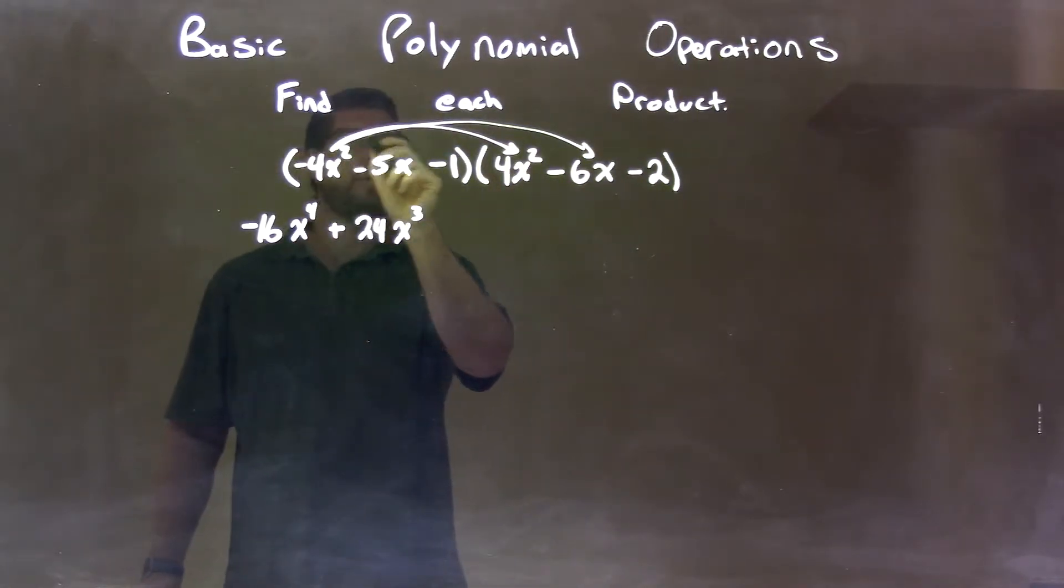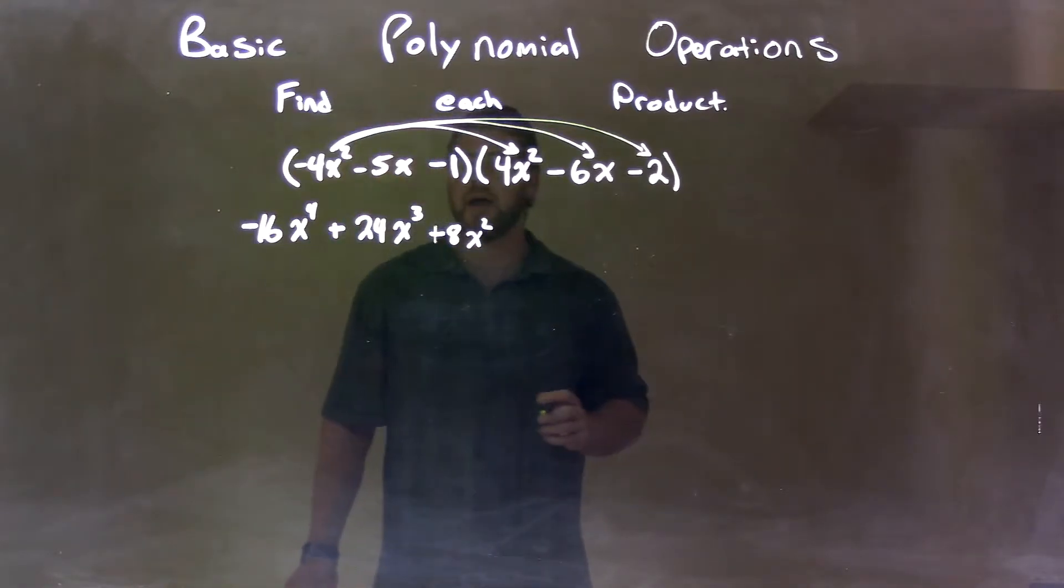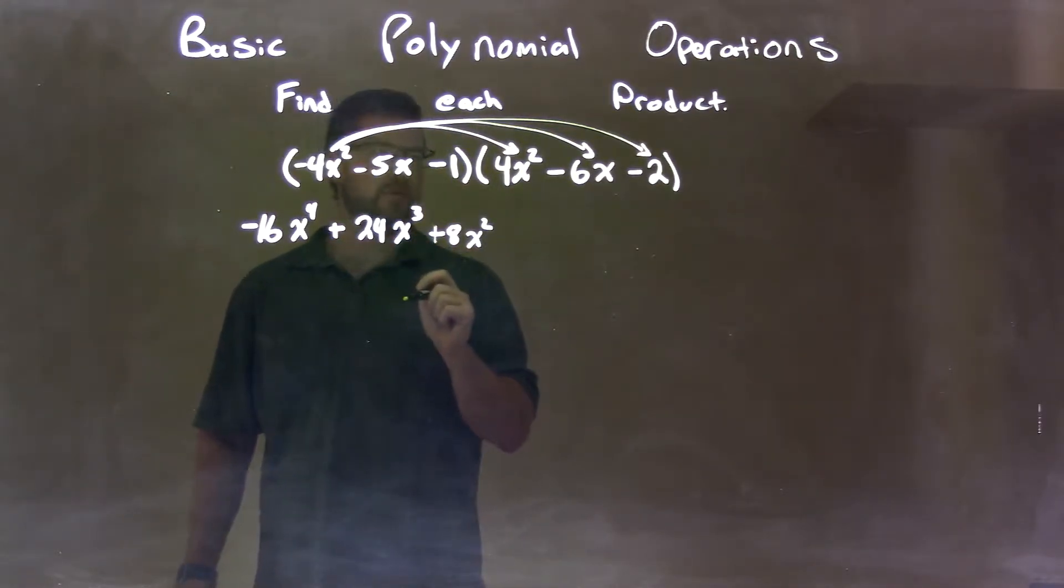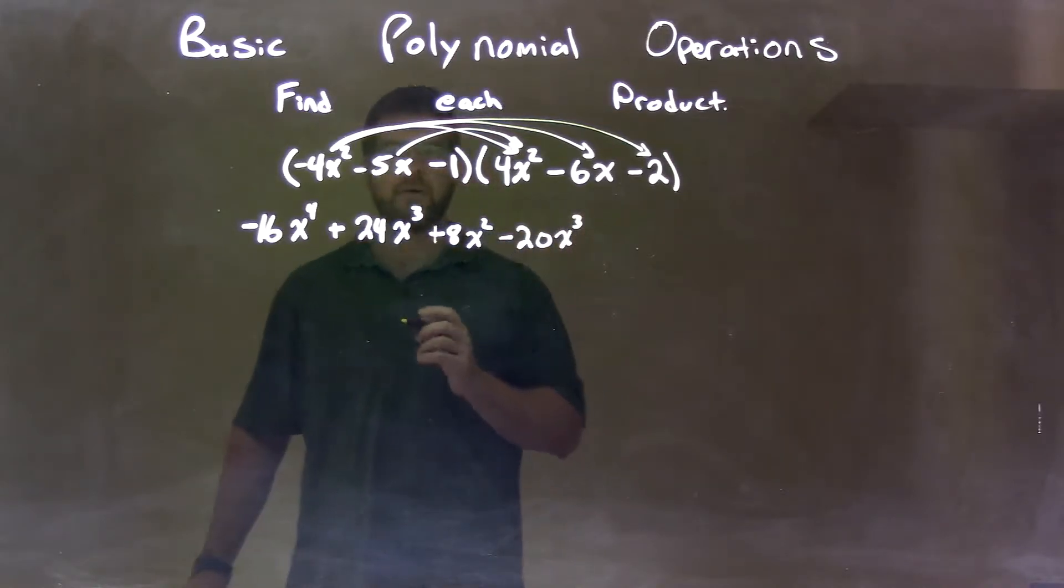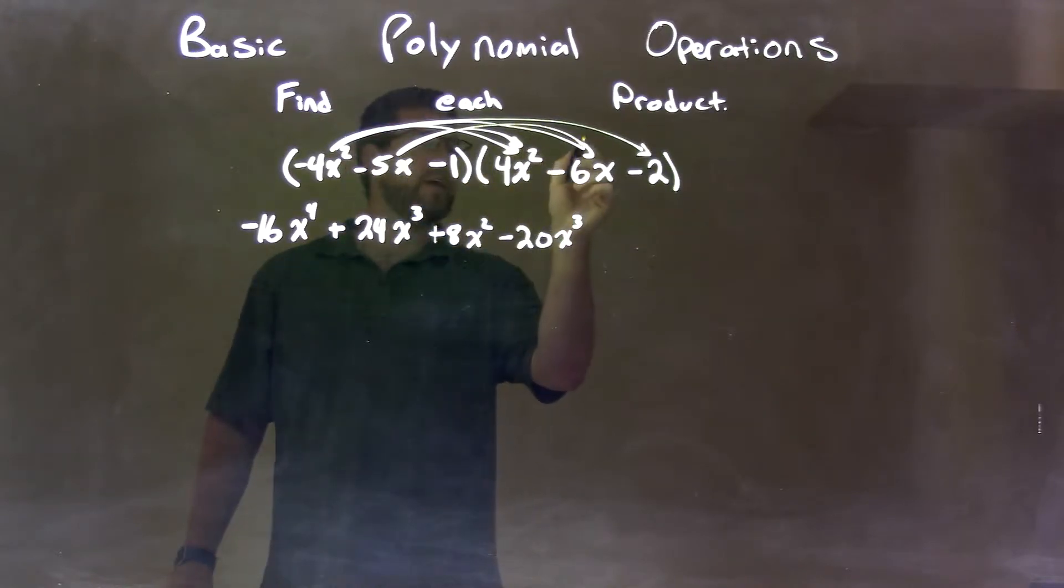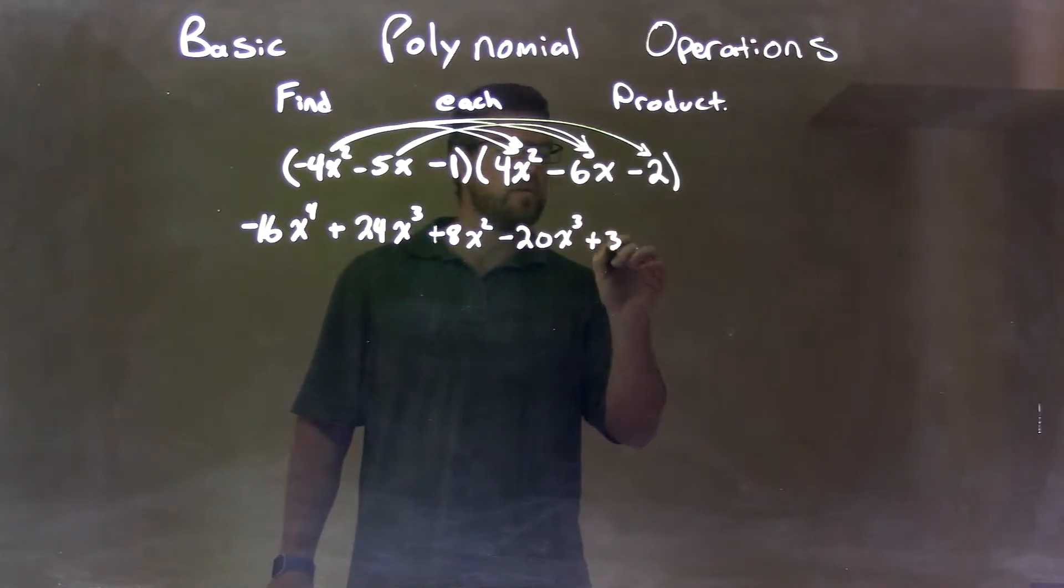Now, what we have to do is multiply the negative 5x to all three parts. So negative 5x times positive 4x squared, that's negative 20x to the third power. Then, we have negative 5x times negative 6x, which is positive, negative times negative is positive, so positive 30x squared.